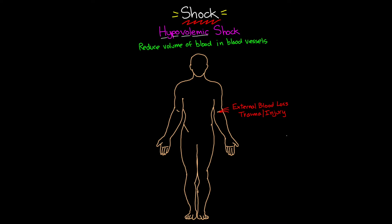For our next set of causes, we classify these as internal sources of bleeding, or internal blood loss. There can be multiple causes for this. Some of the more common ones would be ruptured blood vessels and ectopic pregnancies. And finally, even though it's probably technically considered an external source of bleeding, we also have our GI bleeds — both upper and lower GI bleeds.